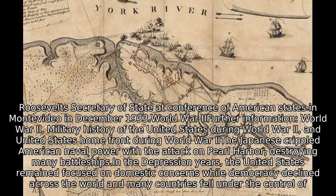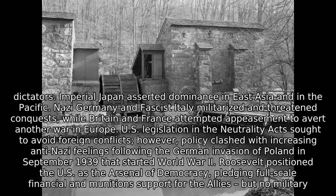In the Depression years, the United States remained focused on domestic concerns while democracy declined across the world and many countries fell under the control of dictators. Imperial Japan asserted dominance in East Asia and in the Pacific. Nazi Germany and fascist Italy militarized and threatened conquests, while Britain and France attempted appeasement to avert another war in Europe. U.S. legislation in the Neutrality Act sought to avoid foreign conflicts. However, policy clashed with increasing anti-Nazi feelings following the German invasion of Poland in September 1939 that started World War II. Roosevelt positioned the U.S. as the arsenal of democracy, pledging full-scale financial and munition support for the Allies but no military personnel, carried out through the Lend-Lease agreements.